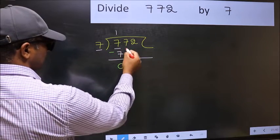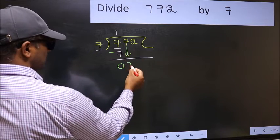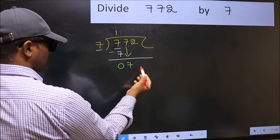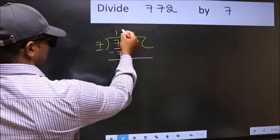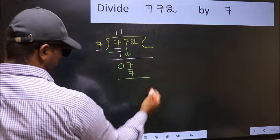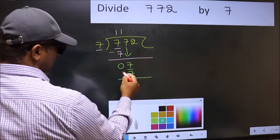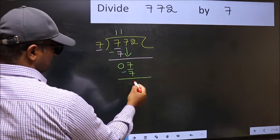After this, bring down the beside number. So 7 down. Now 7. When do we get 7 in 7 table? 7 once 7. Now you should subtract. 7 minus 7, 0.